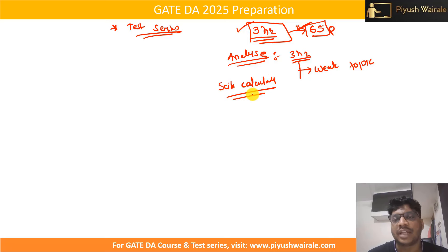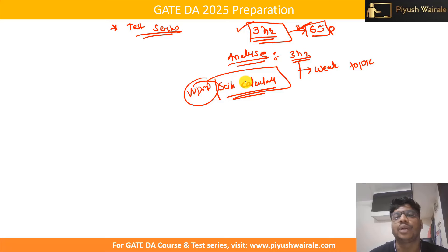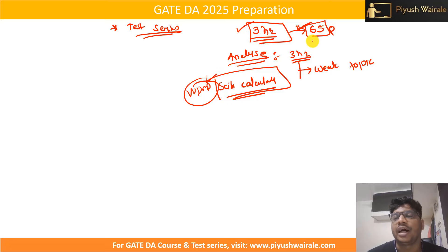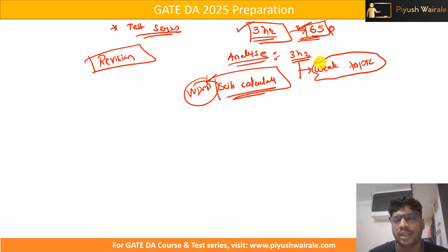Sit for three hours, use the calculator, then analyze the entire test. Before going to the next test after three days, you should be able to solve all 65 questions properly. Identify your weak topics, your strong topics, and any silly mistakes. Between tests, do revision — including watching videos for weak topics. Follow this pattern: every three days, give one mock test.